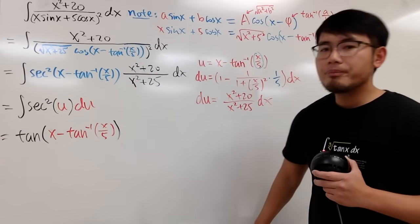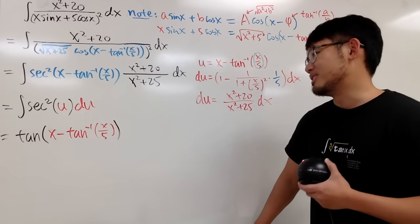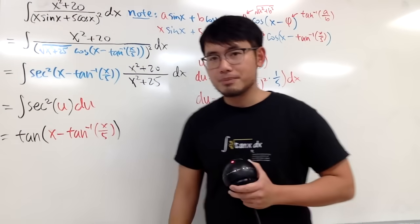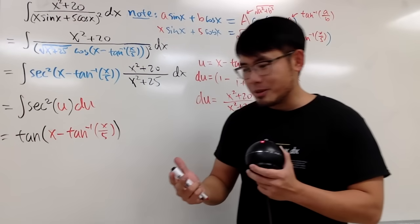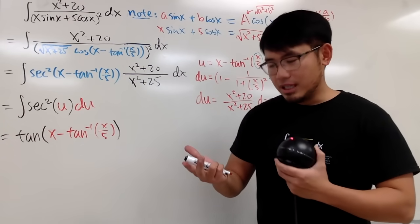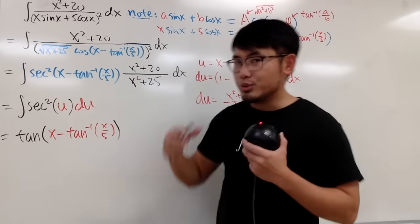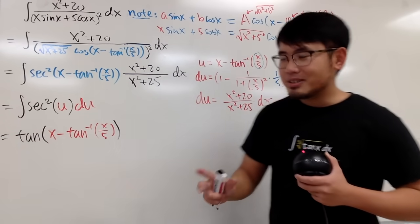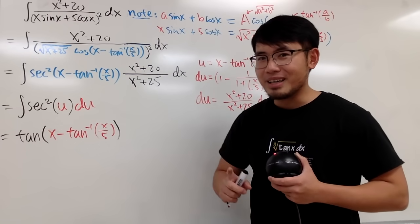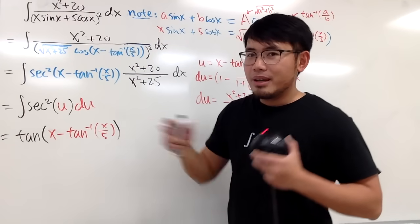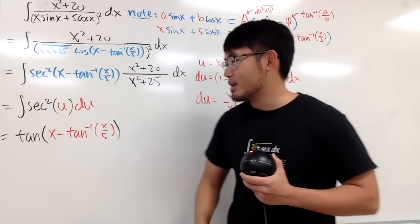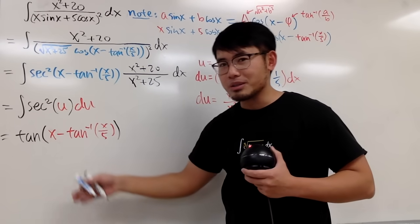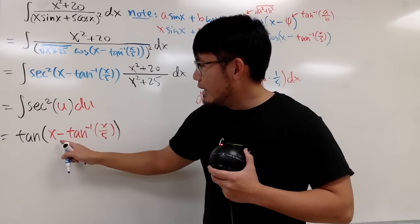You can stop here, but to understand where this kind of question comes from — people start with a crazy-looking expression and differentiate it; if things cancel nicely you get a clean result, and integrating that gives a crazy integral like this. The integral and its answer should look alike — we'll use the angle difference formula for tangent to convert back.